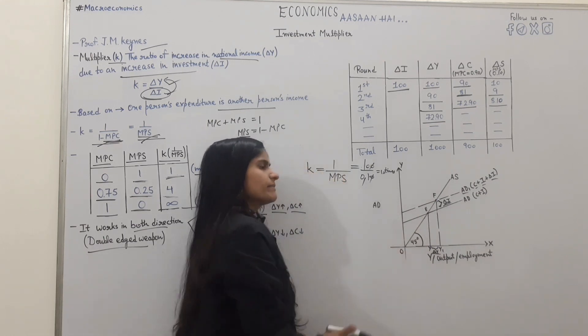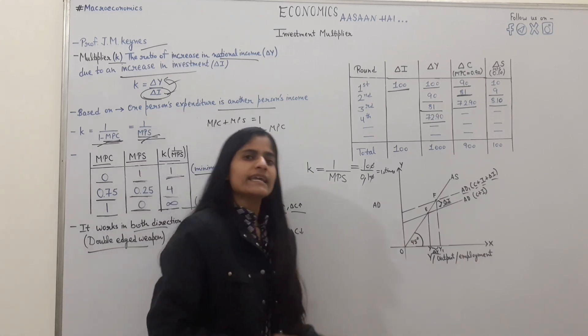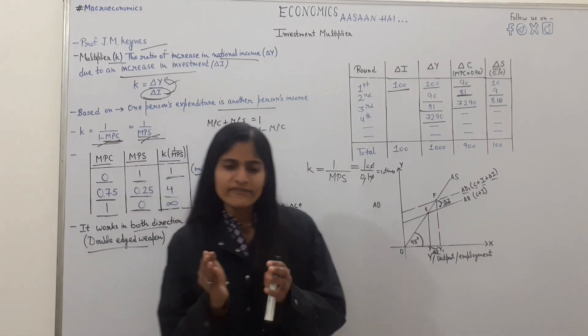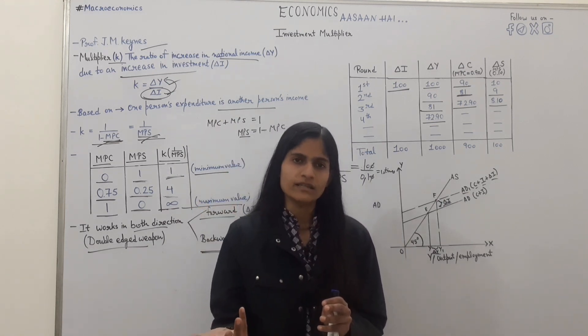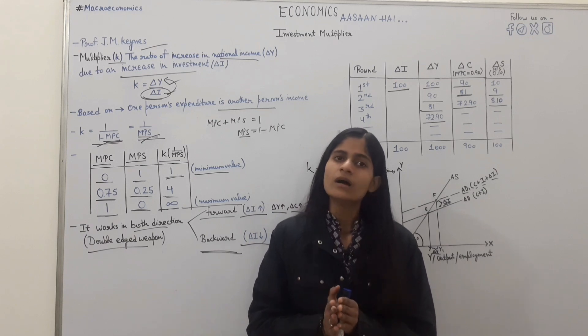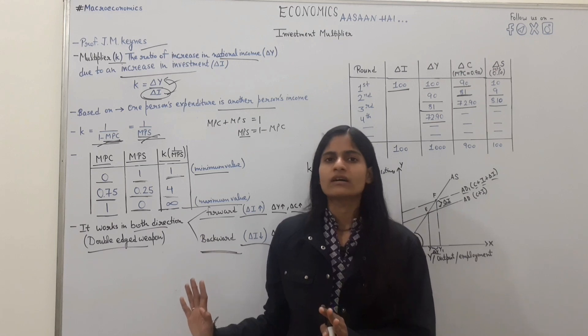This way we show the investment multiplier diagrammatically. That investment multiplier, what happens? In the investment, when we increase, multiple times the income increases. This is the expenditure of the other income. This is the double hedge weapon, because it is forward and backward, which is the direction of the work.